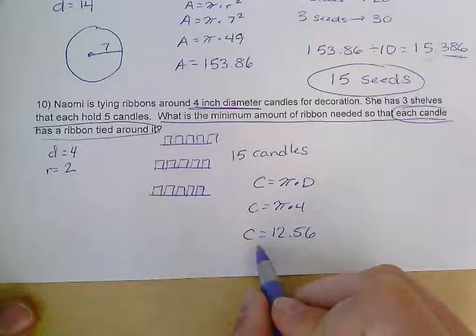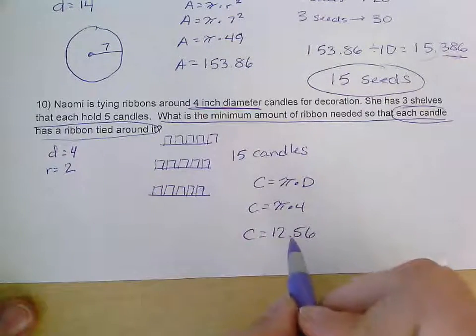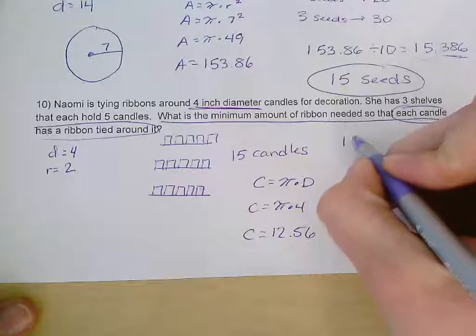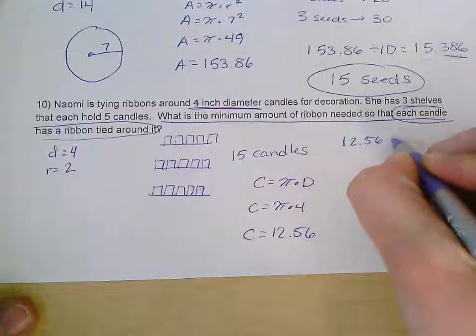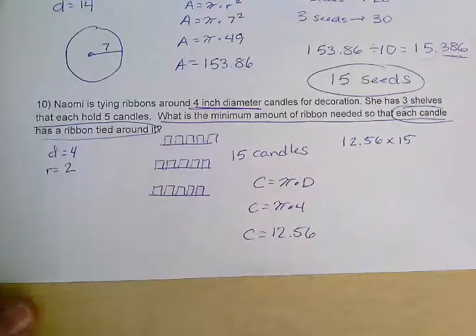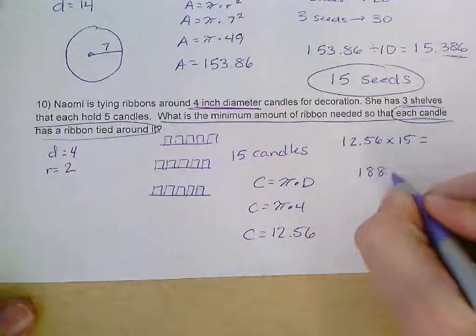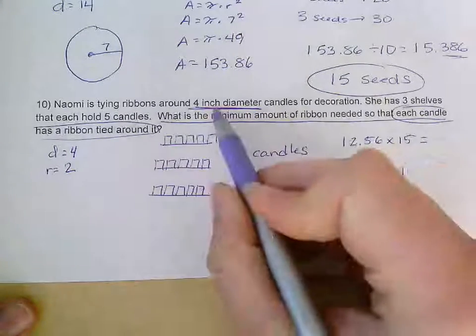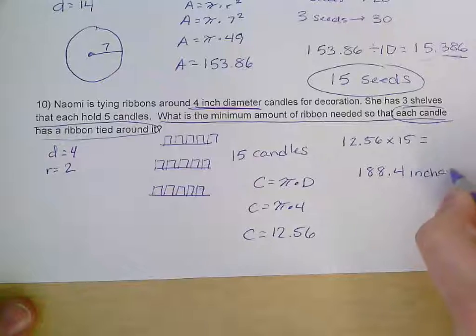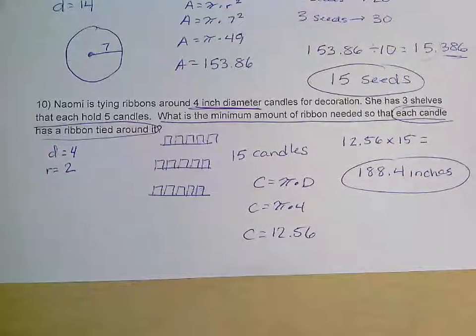This would be for one candle, though, and I have 15 candles. So if I need this much ribbon for one candle, if I need to find that much ribbon and I have 15 candles, I'm going to multiply by 15, and I end up with an answer of 188.4 inches of ribbon. So I need 188.4 inches of ribbon.